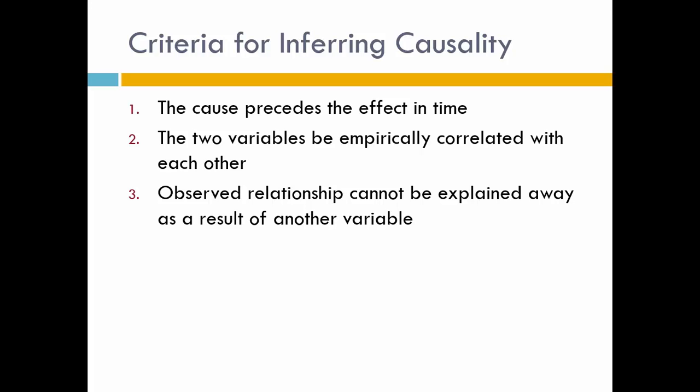The second criterion is that two variables are empirically correlated with each other. If you remember back to your statistics class, that means we ran a statistic and the two variables have a relationship. We could run a Pearson's R correlation if the two variables were continuous, or a chi-square if they were categorical variables. That's another reason we need to figure out the level of measurement of our variables — the two variables must have a statistical relationship before we can determine causality.